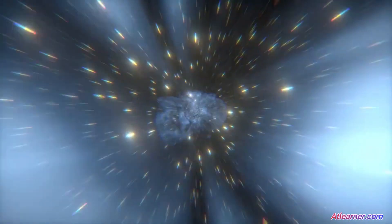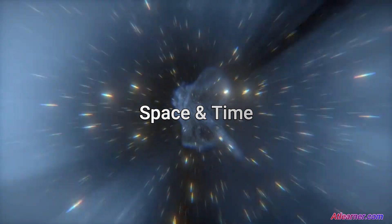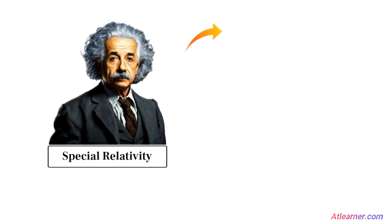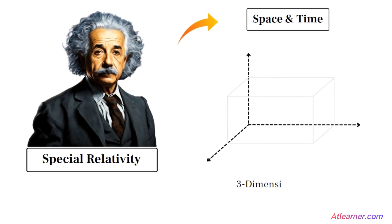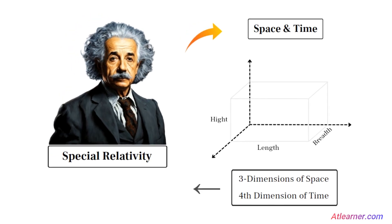So, let's start the explanation of relativity with the concept of space and time. In Einstein's special relativity, he created a fundamental relation between space and time, where the physical universe consists of four dimensions: the three dimensions of space — length, breadth, and height — and the fourth is the dimension of time. This fourth-dimensional space-time is also known as the space-time continuum.